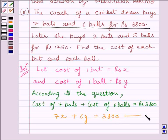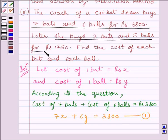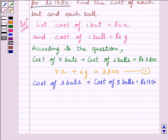Let us name this equation as 1. Now the second condition given in the question is that she buys 3 bats and 5 balls for Rs. 1750. The cost of 3 bats and the cost of 5 balls is equal to Rs. 1750, as given in the question.